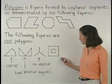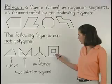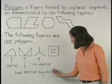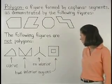In the final figure, again we have two separate interior regions, so this figure is not a polygon.